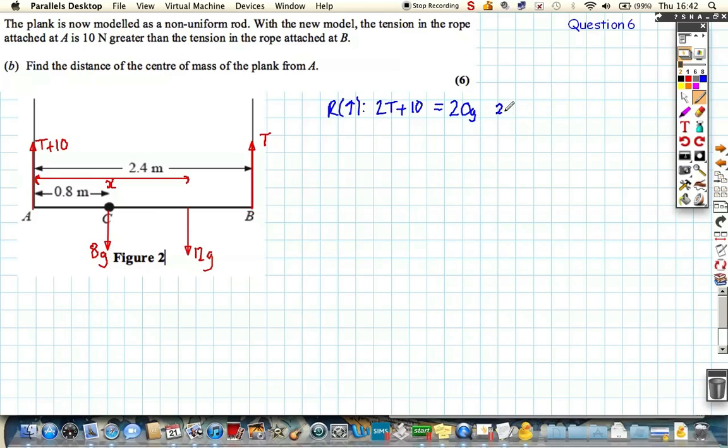So let's resolve straight up and down and see what happens. We've now got 2T plus 10, combining the two tensions, equals 20g. I'll call this equation 2. I might or might not need this. Now if I take moments again, resolving around A, because then that gives us this force times this distance X, it still remains in equilibrium. So we know that the total clockwise is the total anticlockwise. We've got 0.8 times 8g, that's the particle C. We've now got 12g times X, that's the weight of the rod. And then we've still got 2.4T, 2.4 times T for the tension at B.